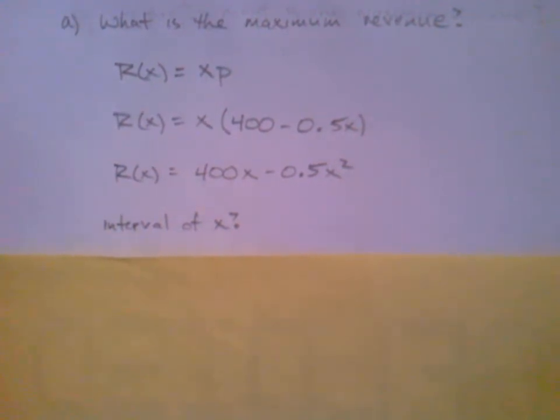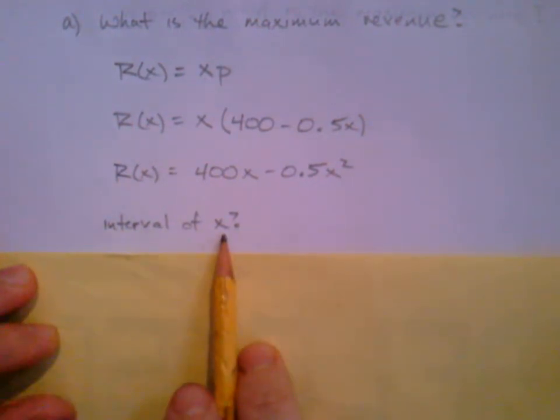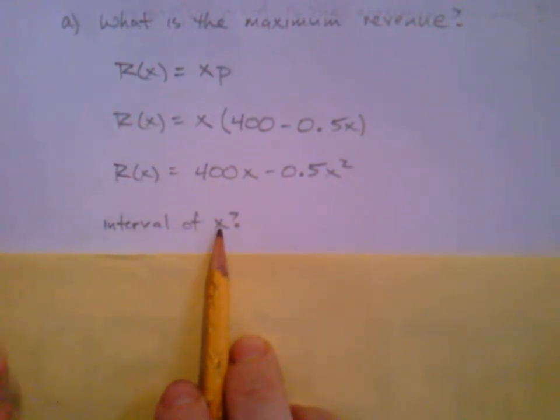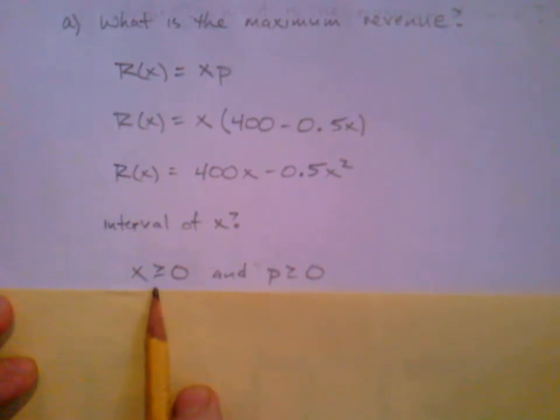What is the largest value that x can take? What is the smallest value that x can take? What's key here is noticing two things. Remember what x and P stand for. X is the number of cameras that we produce. So we know that the number of cameras we produce is going to be at least 0. It's not possible to produce negative cameras. So we know x is greater than or equal to 0.